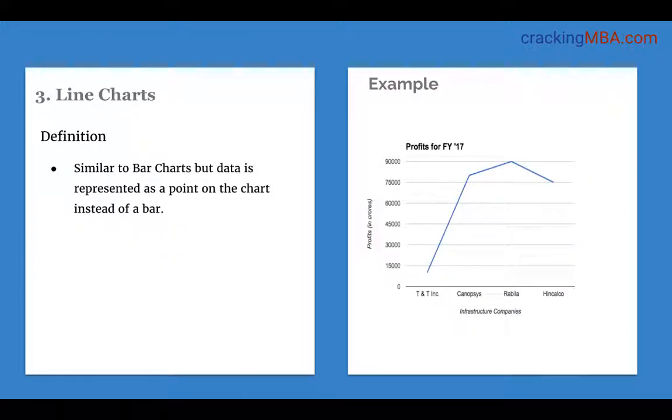Let's move on to line charts. These are similar to bar charts but the data is represented as a point instead of a graph. Let us look at an example here. This line chart represents the profits of four infrastructure companies for financial year 17. This is similar to the data we have seen in the previous slide, but the data here is now represented as dots.